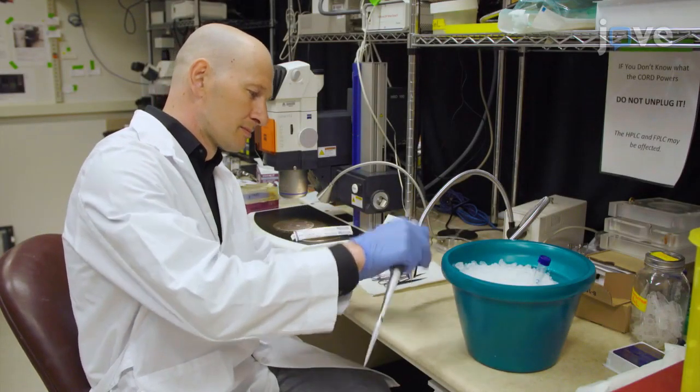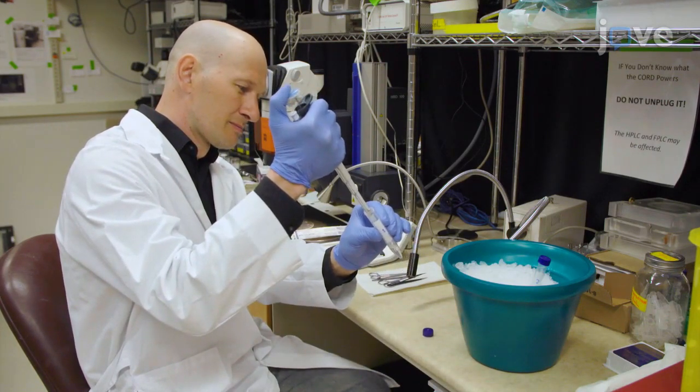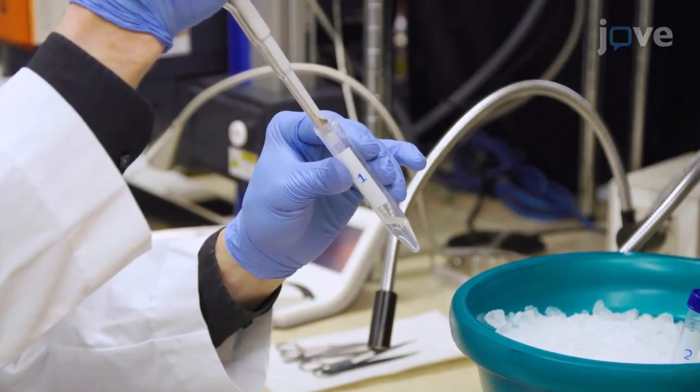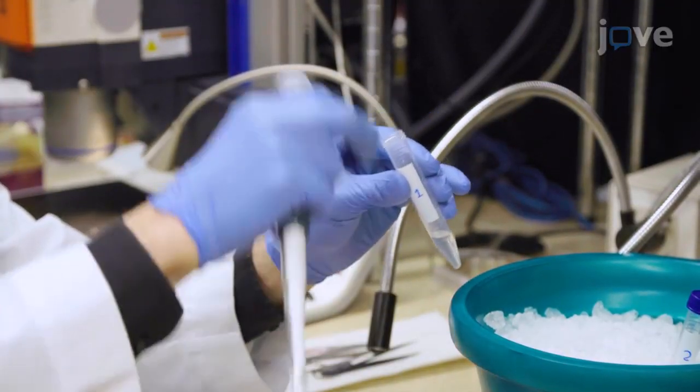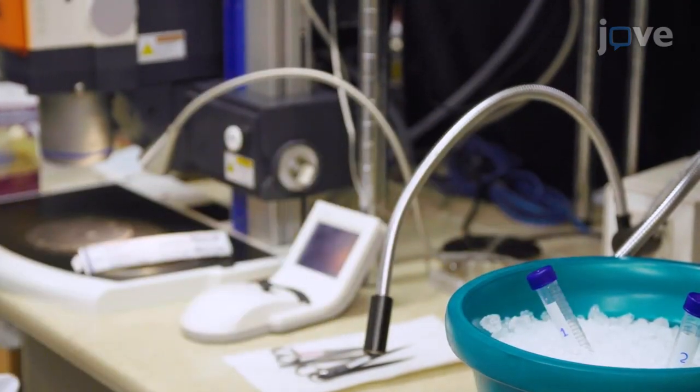For IV injection, concentrate cells to 0.5 to 1 million cells per milliliter using ice-cold 1XPBS to dilute or re-suspend the cells. Expect that approximately 1 milliliter of cell suspension will be needed for every 10 embryos.